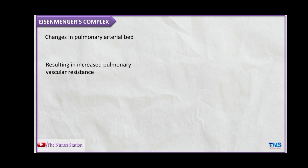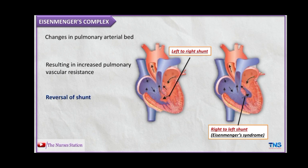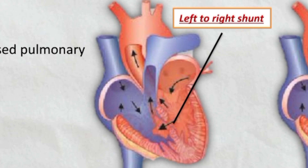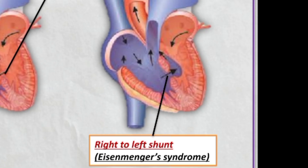In Eisenmenger's complex, due to the increased blood flow to the lungs and pulmonary hypertension, changes occur in the pulmonary arterial bed, resulting in increased pulmonary vascular resistance. This leads to increased pressure in the right ventricle, finally causing a reversal of shunt. Initially in VSD, blood flows from left to right ventricle, but in Eisenmenger's syndrome, there is a reversal — blood flows from the right ventricle to the left ventricle.